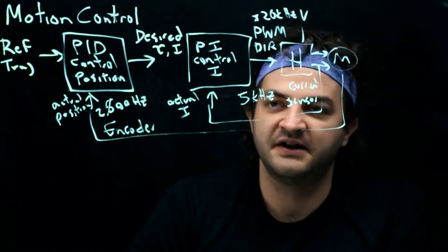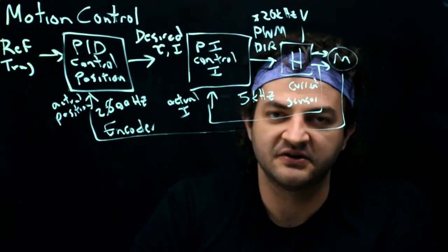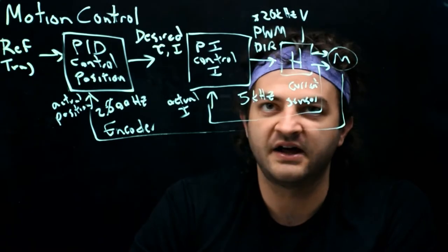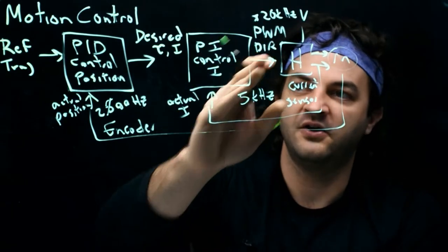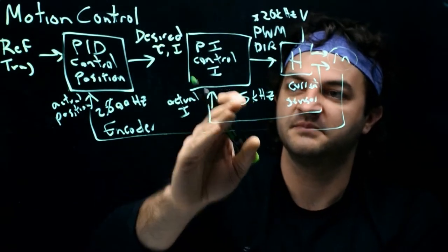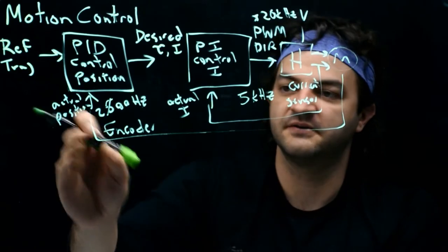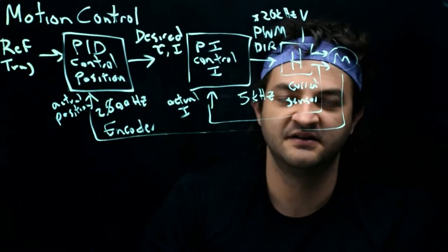So we'll have two ISRs and three timers. We'll have a lot of peripherals: PWM, IO, analog input, and whatever the encoder does.